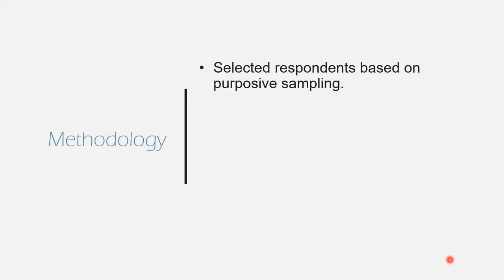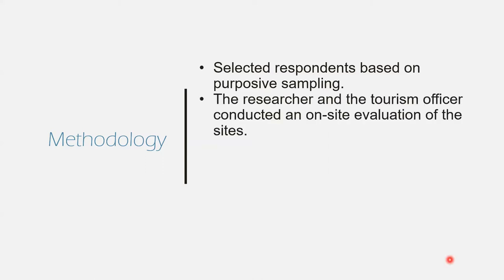Now let's move on to the methods I used to collect and gather my data. I selected my respondents based on their tourism engagement in Cuyo. I also wrote a letter to the mayors of Cuyo and Magsaysay to ask permission to conduct surveys. Once it was approved, I started gathering my data. For the site evaluation, I worked with the tourism officer of Cuyo and we did an ocular visit to different sites. Since Magsaysay doesn't have a tourism officer, I included the MDR-RMO officer in my survey.